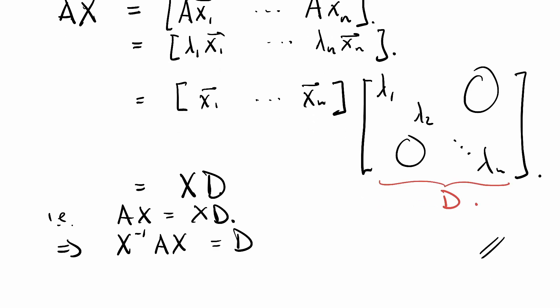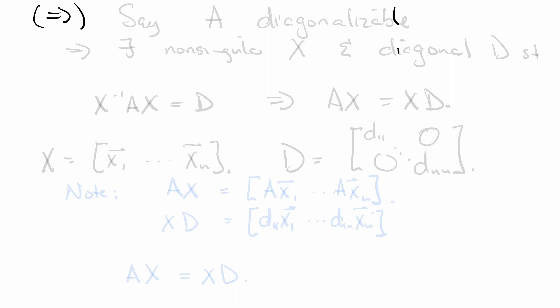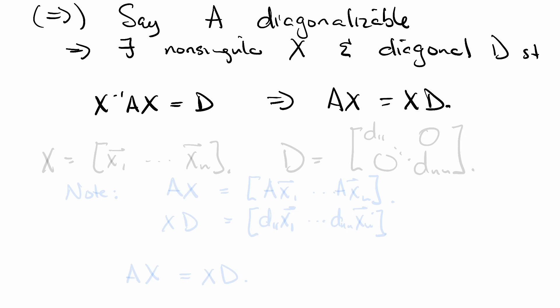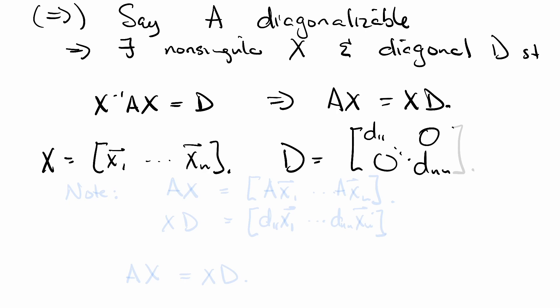Let's do the other direction. Going left to right, we're going to assume that A is diagonalizable and we're going to prove that it has n linearly independent eigenvectors. So if it's diagonalizable, by definition, that means that there exists a non-singular matrix X and a diagonal matrix D such that X inverse AX is equal to D, which of course means that AX is equal to XD, by multiplying both sides on the left by X. Let's take a closer look. Say X is this matrix where the columns are given by the xi's, and D is some diagonal matrix where the only non-zero entries are along the diagonal and it's zero elsewhere.